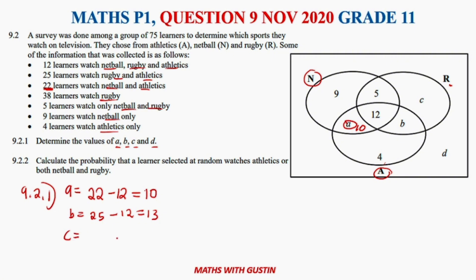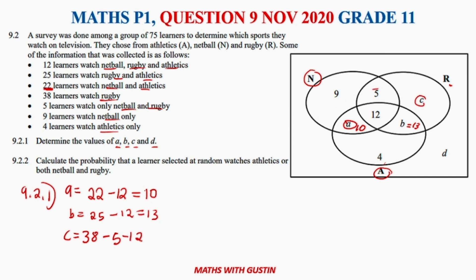Value c represents those watching rugby only. The total number watching rugby is 38. We remove those watching rugby and netball (5), those watching all three (12), and those watching rugby and athletics (13). So c equals 38 minus 5 minus 12 minus 13, giving c = 8.